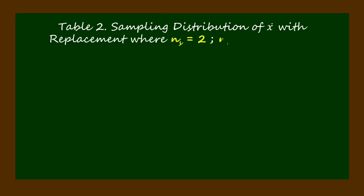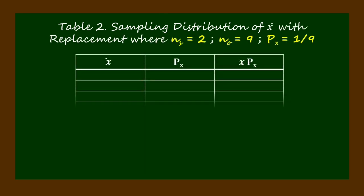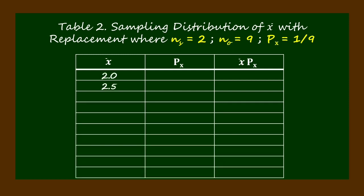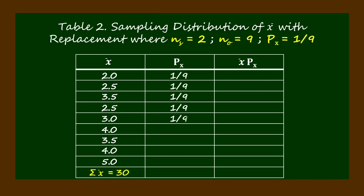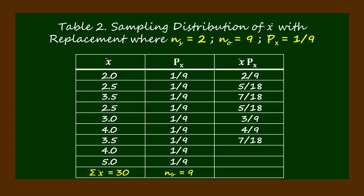Now let's construct Table 2, sampling distribution of means with replacement, where the sample size equals 2, number of observations equals 9, and the probability of each sample mean p sub x equals 1 over 9. On the first column of the table, we list down the nine sample means obtained from Table 1, and on the second column are the corresponding probabilities of each sample mean. On the third column are the products of each sample mean and their corresponding probabilities. From the table, we get the summation of the sample means equal to 30, the number of observations equal to 9, and the sum of the products of bar x and p sub x equals 3.33.